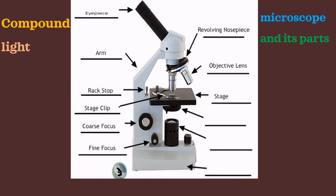The rack stop is an adjustment that determines how close the objective lens can get to the slide. The illuminator, also called the light source, provides light. The diaphragm adjusts the amount of light passing through the stage. The base is the bottom of the microscope and provides support. Now let's discuss the parts in a practical way.